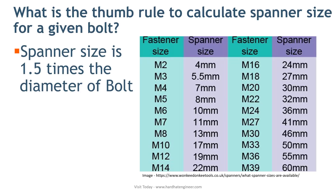What is the thumb rule to calculate spanner size for a given bolt? A standard chart is available that shows the size of a given bolt and the corresponding spanner size. But if this chart is not available, you can use the thumb rule: the approximate spanner size is 1.5 times the diameter of the bolt.